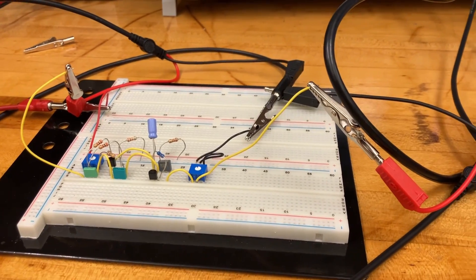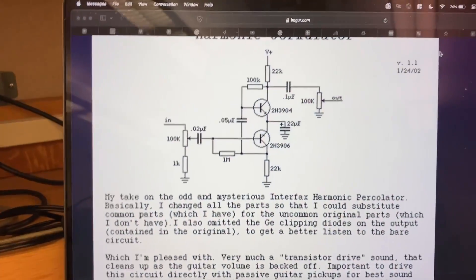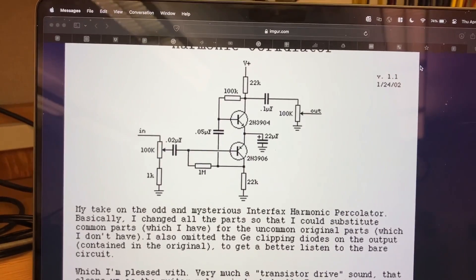Except that the harmonic percolator actually uses harder to find transistors. So we used silicon transistors to build its variant, the harmonic jerkolator.